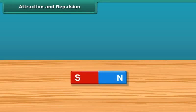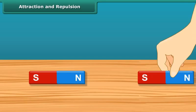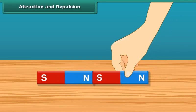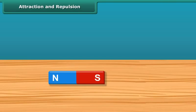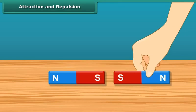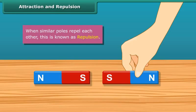Now that you know about poles of a magnet, let us look at the attraction and repulsion properties too. In the case of magnets, when the south pole comes in contact with the north pole, these get attracted to each other. This is better known as opposite poles attracting each other. Similarly, when the south pole comes in contact with another south pole of a magnet, they do not attract each other. In fact, they repel each other. This is better known as similar poles repelling each other.